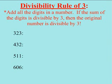To see if a number is divisible by 3, you have to add up all the digits in a number. If the sum of the digits is divisible by 3, then the original number is divisible by 3.